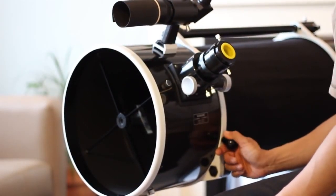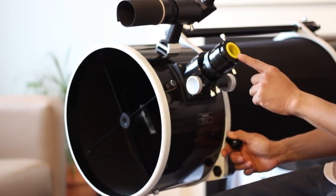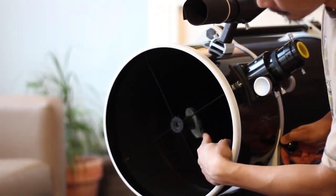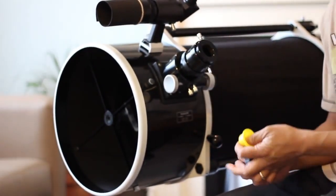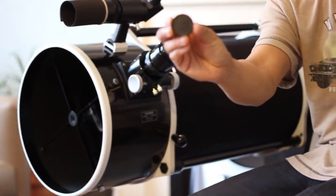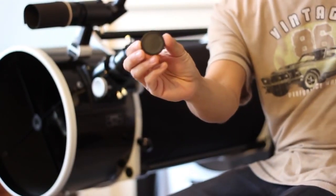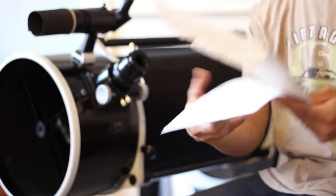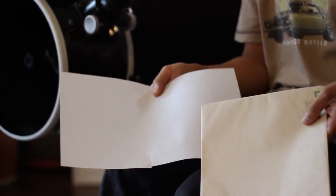So the first step is to align the secondary mirror to be directly underneath the focuser. This is the secondary mirror and this is the focuser. You're going to need a collimation cap and two sheets of paper, preferably having different shades. This one is white and this one is brown.